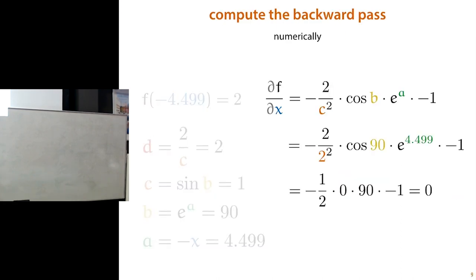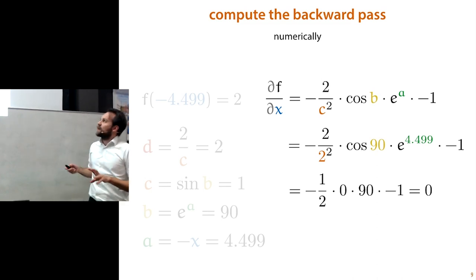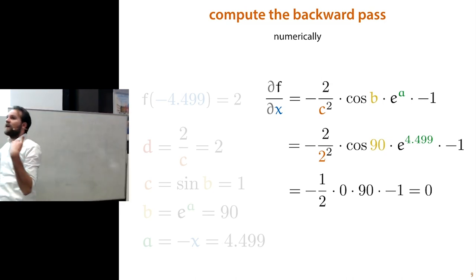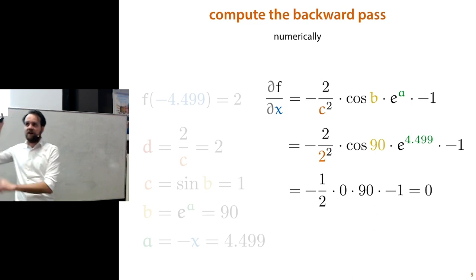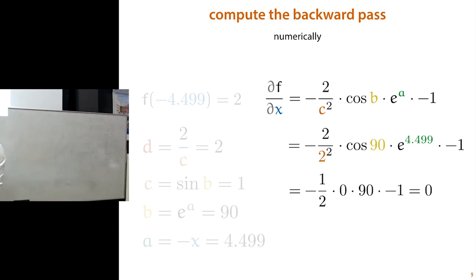We'll call that scalar backpropagation, because whenever we take the derivative it's always the scalar derivative of one number over another number. We will contrast that in this lecture with matrix or tensor backpropagation, where we start taking derivatives of vectors and matrices with respect to vectors and matrices. We'll see how that works later in this lecture.